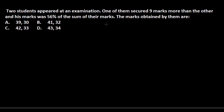Now we can construct an equation if we assume the value of marks. There are two students, and one of them scored nine marks more than the other. So if we assume the marks of one student and then add 9, we get the marks of the other student. Then we can put it into the equation and get the values. You need to apply your logic because that's where percentage problems come into play — they are much more versatile.